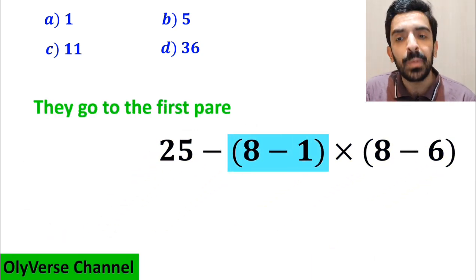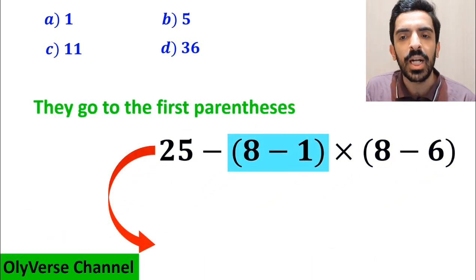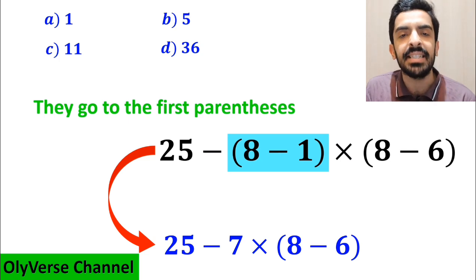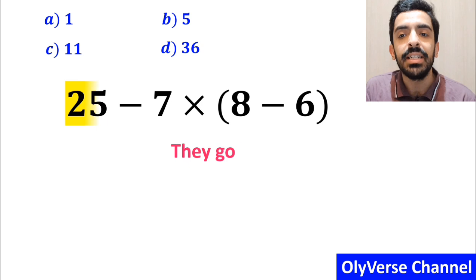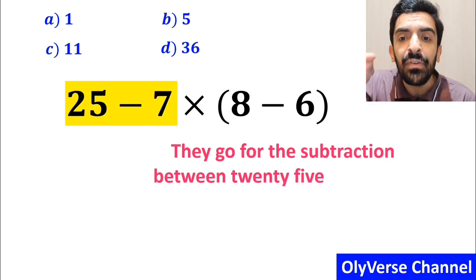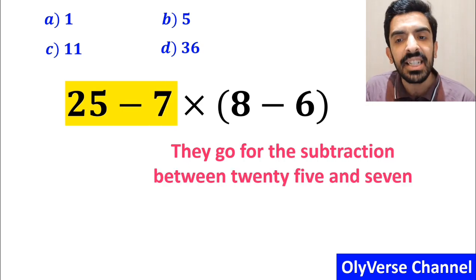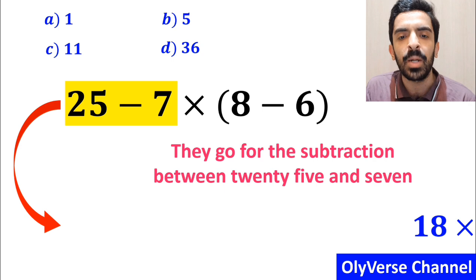Then they go to the first parenthesis and instead of this expression, they write 25 minus 7 multiplied by 8 minus 6 inside the parenthesis. And the next step, they go for the subtraction between 25 and 7 which I've highlighted in yellow.